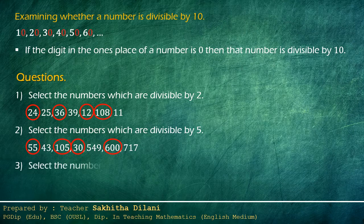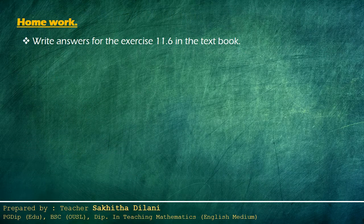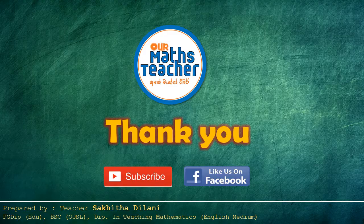The third question: select the numbers which are divisible by ten. You are given six numbers. To identify numbers divisible by ten, the ones place digit should always be zero. Out of these numbers, 200 and 3,100 are divisible by ten without a remainder, as their last digit is zero. Now you are given a homework: write answers for exercise 11.6 in the textbook. I will be back in the next video lesson. Thank you.